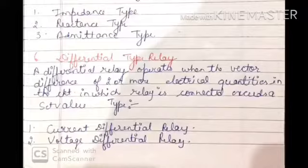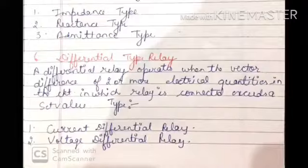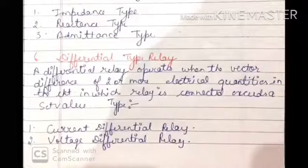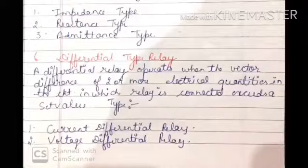Then we have the differential type relay. This relay operates when the vector difference of two or more electrical quantities in the circuit exceeds a specified value. There are two subtypes: current differential type and voltage differential type. In the current differential type, the relay compares the current entering a section of the system and the current leaving the section. Under fault conditions, these currents are different, and the relay operates.